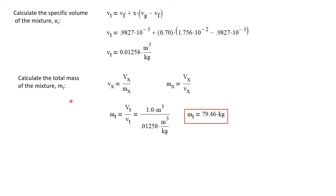Now let's calculate the total mass of the mixture. We'll start with the definition of specific volume: specific volume is simply the volume divided by the mass. Rearranging, the mass equals the volume divided by the specific volume. Using the subscript T for total, the mass of the total mixture is the total volume divided by the specific volume of the mixture. The tank volume is one cubic meter, and the specific volume of the mixture is 0.01258 cubic meters per kilogram, giving us a total mass of 79.46 kilograms.